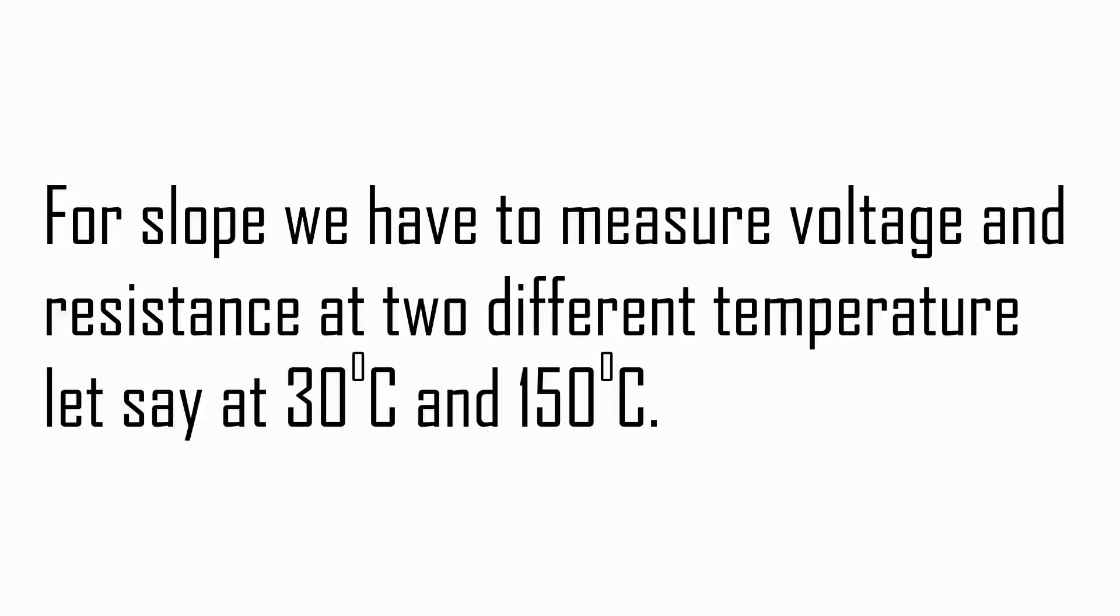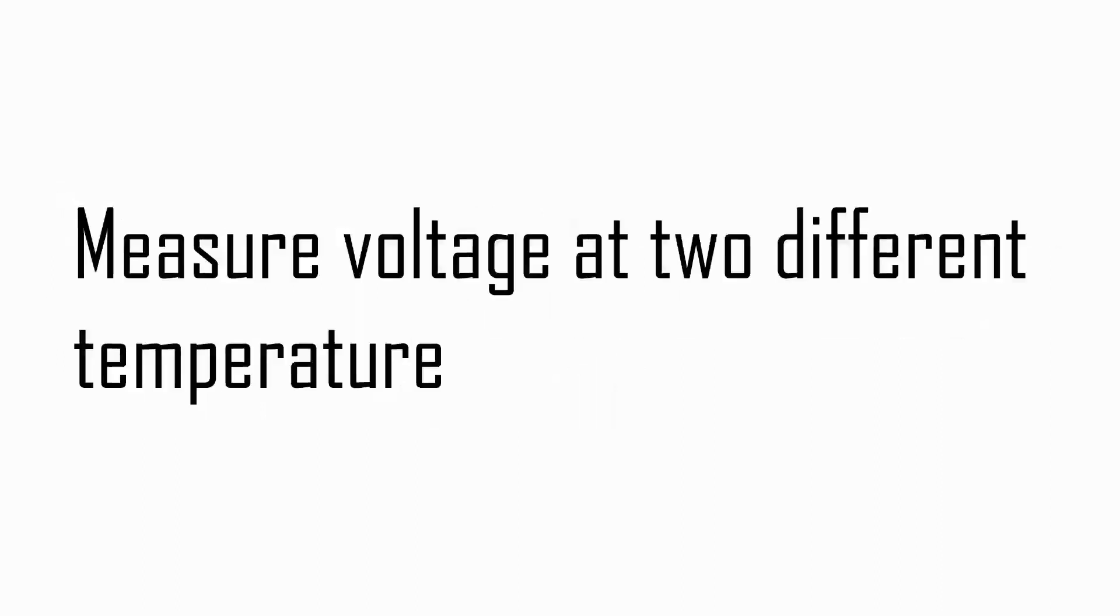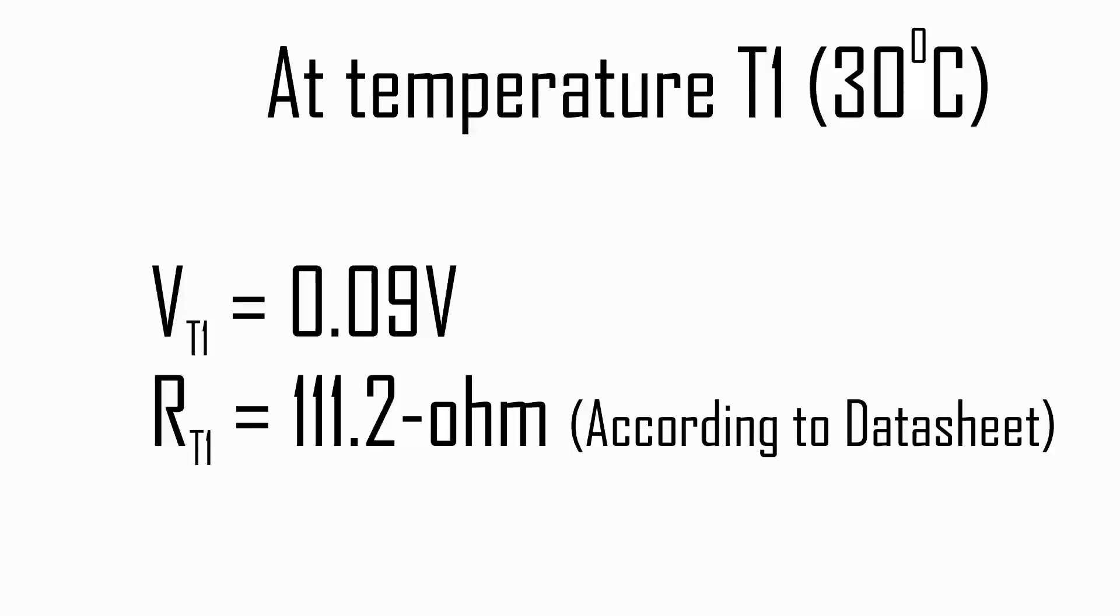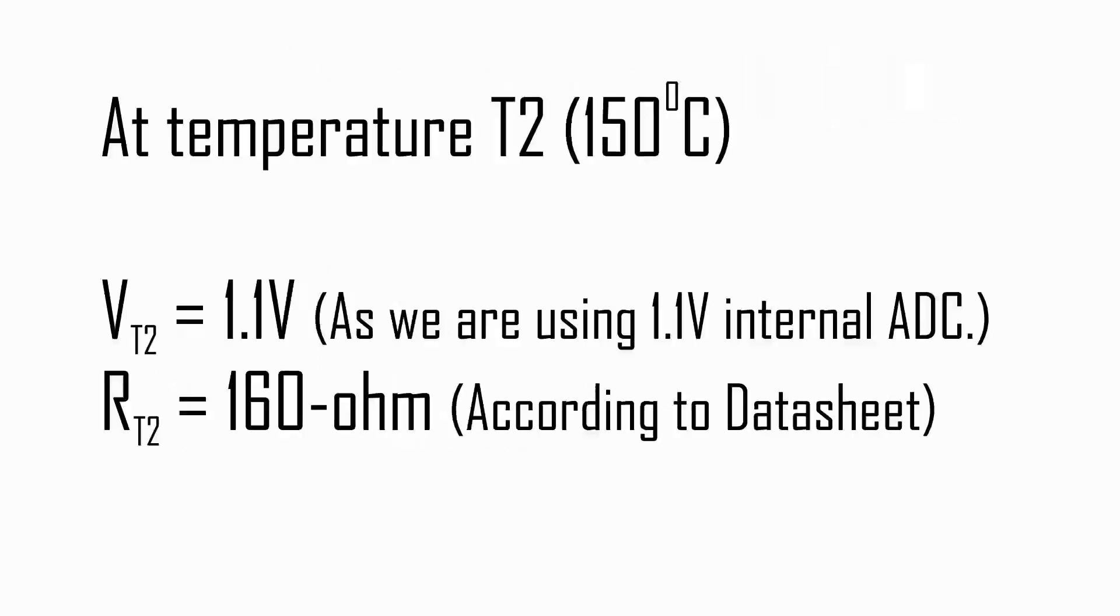Now for slope, we have to measure voltage and resistance at two different temperatures. Let's say at 30 degrees Celsius and 150 degrees Celsius. You can measure voltage and resistance at any two different temperatures. At temperature T1 (30 degrees Celsius), VT1 equals 0.09 voltage. From the datasheet at 30 degrees Celsius, it offers 111.2 ohms. Similarly, at temperature 150 degrees Celsius, the voltage is 1.1 volt. As we are using 1.1 volt internal ADC and our maximum measuring temperature is 150 degrees Celsius, resistance at this temperature according to datasheet is 160 ohms.